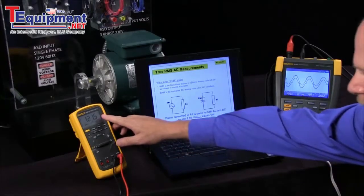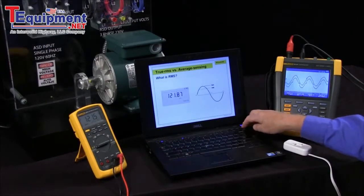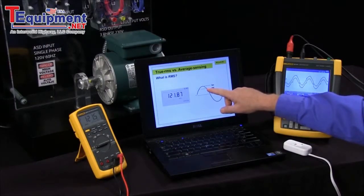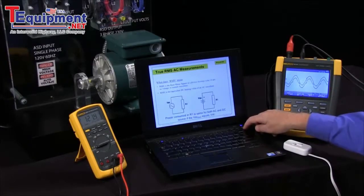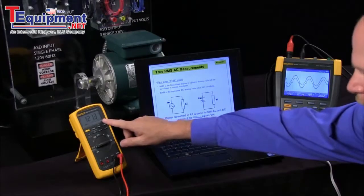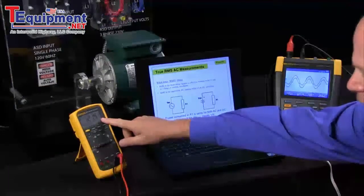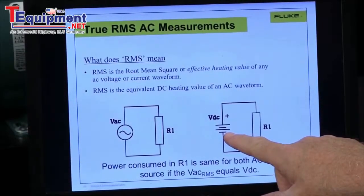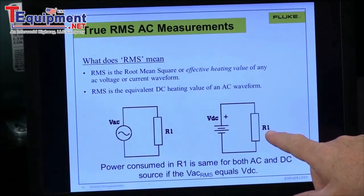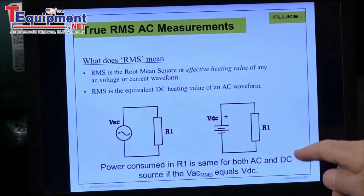When they're taking an RMS measurement, what we're reading is the RMS value of a signal. What the RMS relates to is if I take a 120 volt AC signal, apply it to a resistor, and then I take a 120 volt DC battery, apply it to the same resistor, it'll heat that resistor to exactly the same temperature.